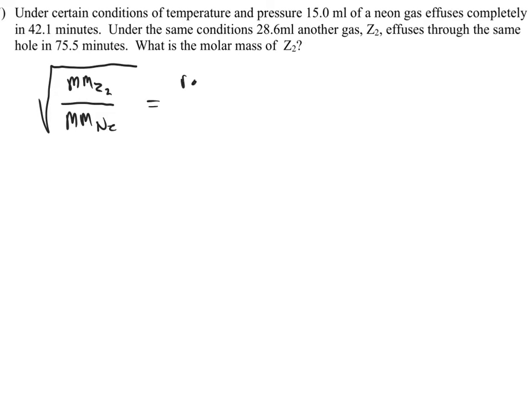that's going to equal the rate of effusion through this hole of neon, and it's a cross. So it's going to be the rate of neon cross the rate of Z2. I've set it up so that the molar mass of Z2 is on top in my equation. Otherwise, if I was looking for the molar mass of neon, I'd put it on top. That's how we usually set up our equation.